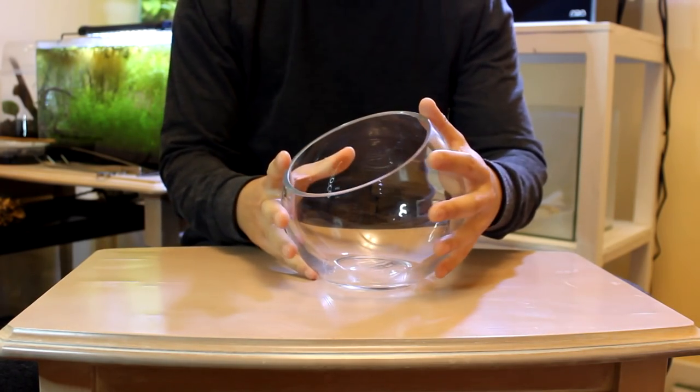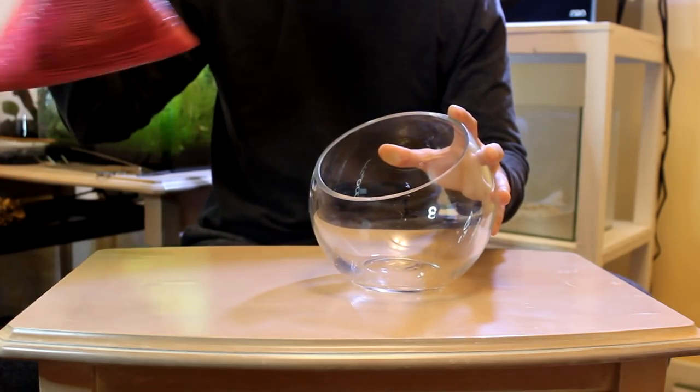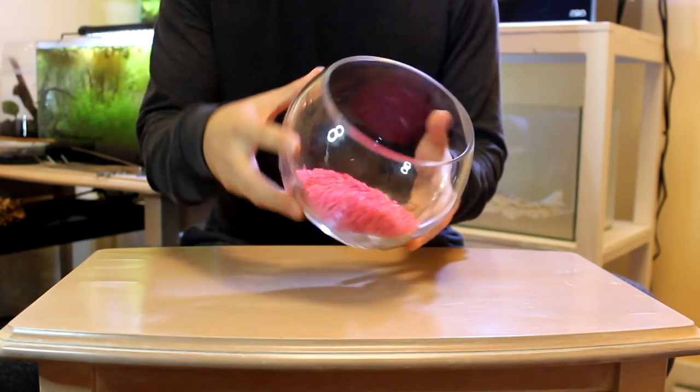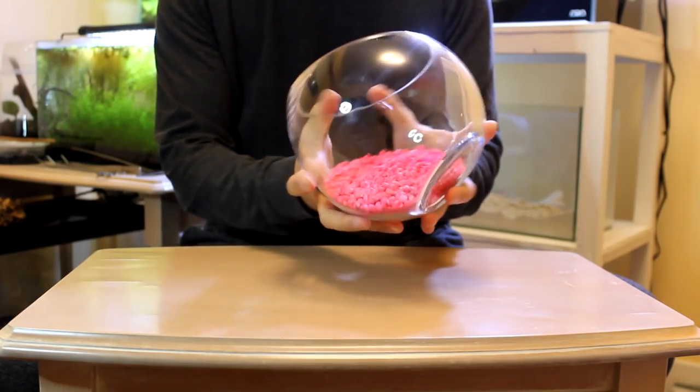Now, the first thing we want to do is prime our fishbowl. We do this by introducing some pink gravel. Make sure to swish it around in there and really cover every nook and cranny.